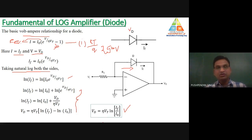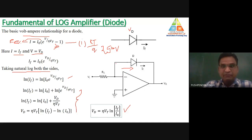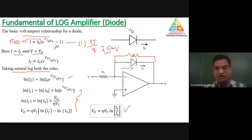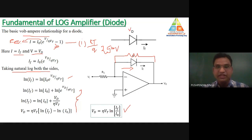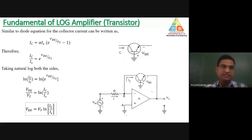We calculate VD because in the inverting amplifier configuration, if we know the total voltage drop across the feedback element, we can calculate the output. So VD = η·VT·ln(IF / I₀), where IF is the diode (feedback) current, I₀ is the reverse saturation current, VT is the thermal voltage, and η is a constant.